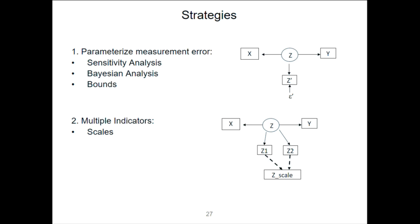What's typically done is that we have multiple measures of a thing and then we add them up in some weighted sum and put them into a single number called a scale. This is the typical thing done in social psychology and other social sciences. We measure multiple things, put them together in a scale, and treat this variable Z-scale as a proxy for Z — we just say that is Z. Then the question is: does Z-scale screen off X and Y? Does it d-separate X and Y? The answer is no.